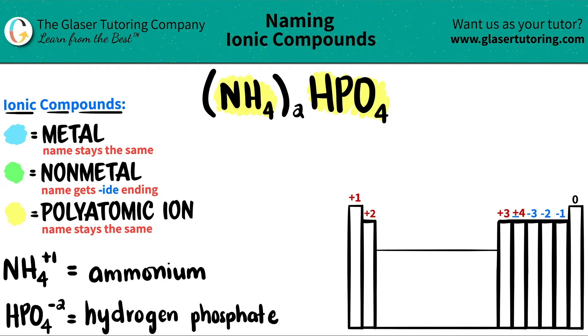So now, all we got to do is just name them. Polyatomic ions, that's all we have here. And both of them, their name stays exactly the same. So that's why you got to memorize them. Ammonium first.